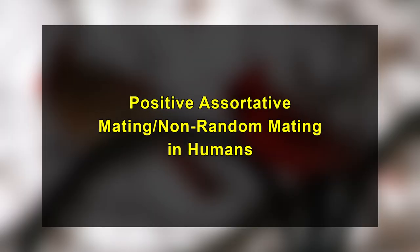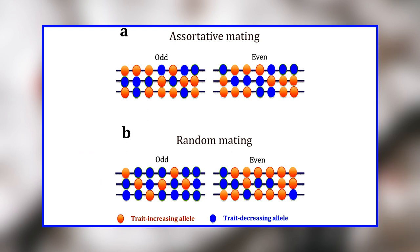Let's now talk about positive assortative mating in humans. Assortative mating in humans has been widely observed and can be broken down into two types: genetic assortative mating, which is mate choice based on genetic type and phenotypical expression, and social assortative mating, which is mate choice based on social, cultural, and other societal factors.